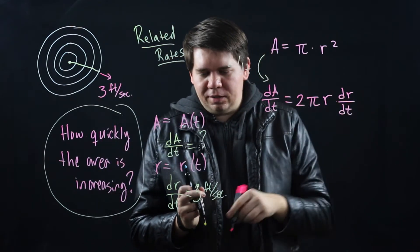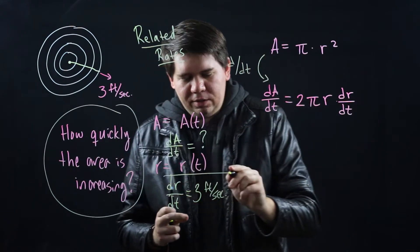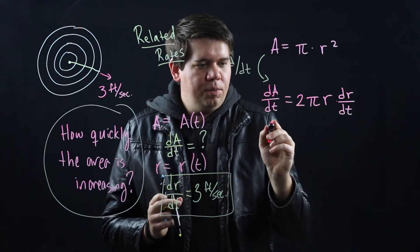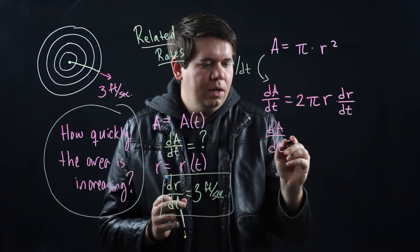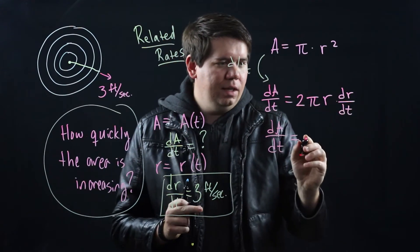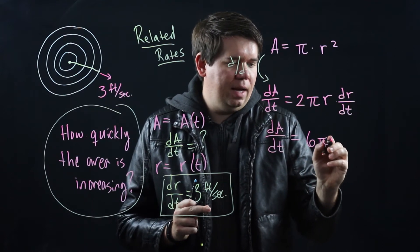Now we know what dr/dt is. We were told that dr/dt is 3 feet per second. So let's plug that in, and we get that the change in area over time will be given by just 2 times the dr/dt which is 3, so that's 6πr.